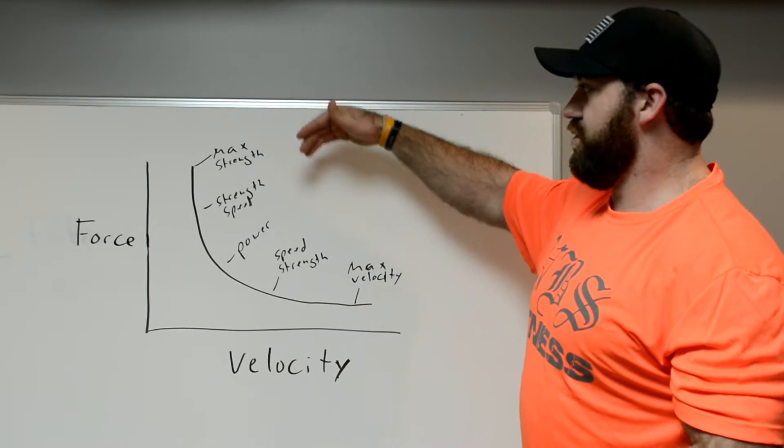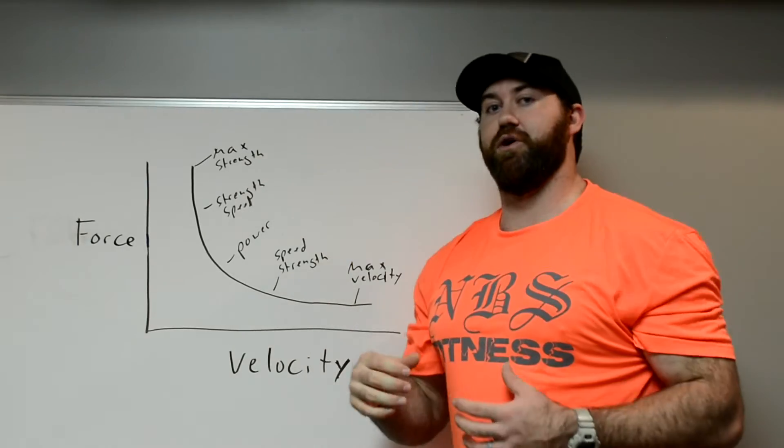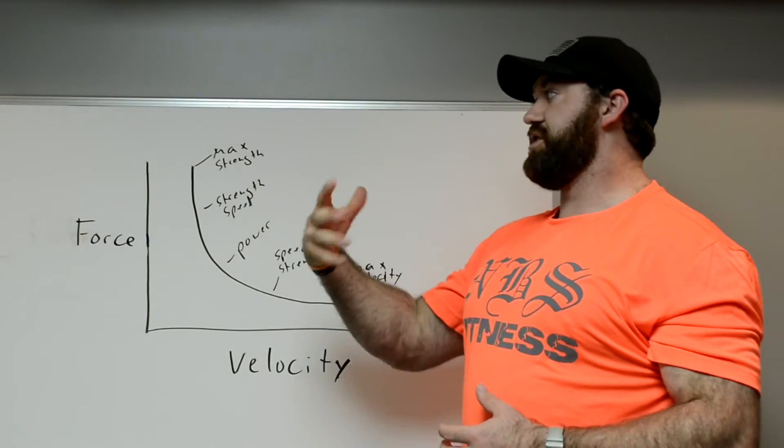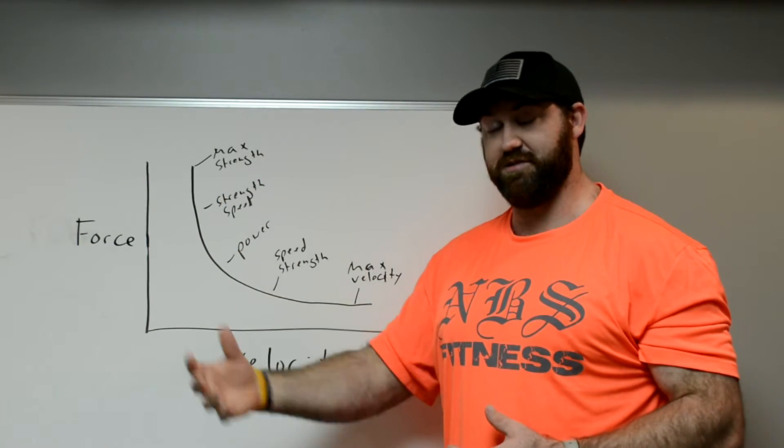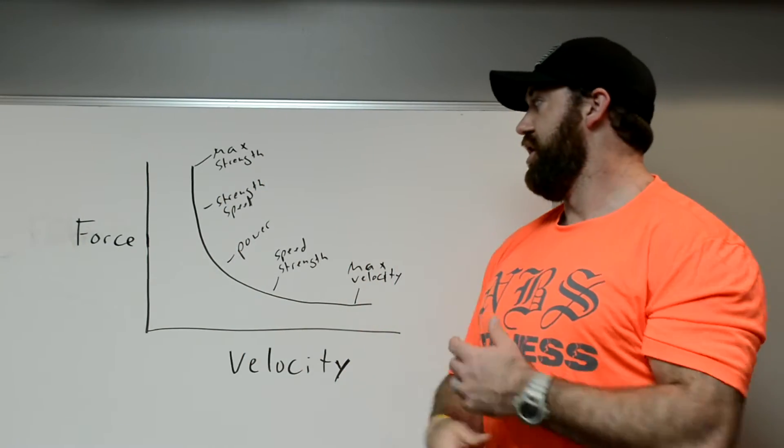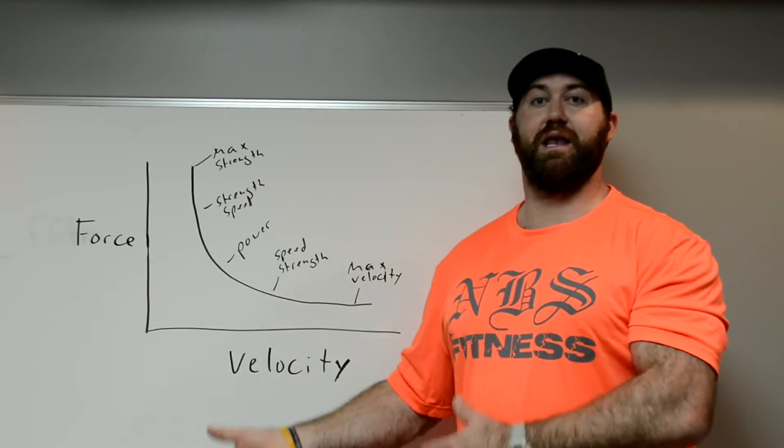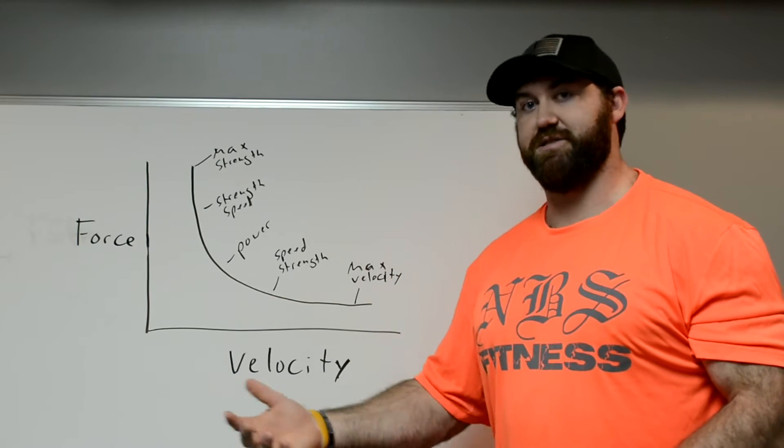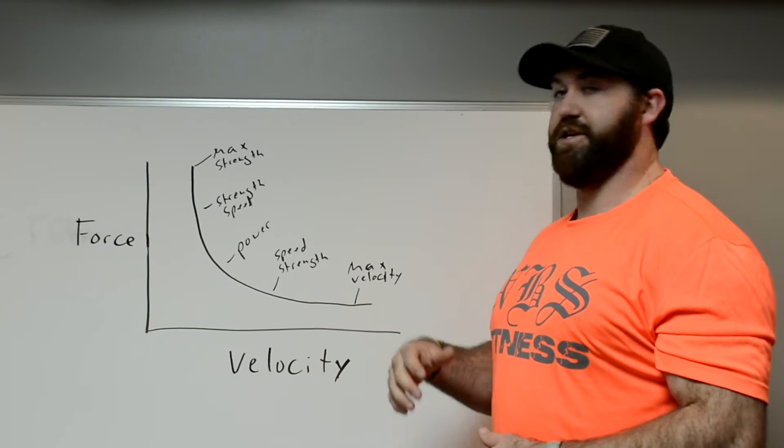Tying into these in between zones we have strength speed and speed strength. Strength speed is your ability to move relatively high weights at a relatively high speed. So this would be like 85 to 90% of one rep max done as fast as possible. Speed strength is your ability to move lighter loads as fast as possible. So this would be things like 50 to 60% done in max speed.